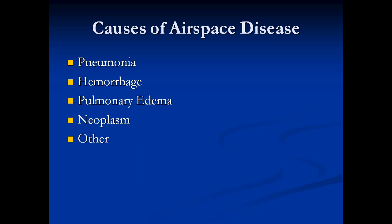What are the causes of airspace disease? First, there's pneumonia — a lobar pneumonia in particular will cause airspace disease. Hemorrhage into the airspaces will cause consolidation. Pulmonary edema can be interstitial or airspace, and when it becomes severe, it causes airspace disease. Finally, there are certain neoplasms and a few other idiopathic conditions that cause airspace disease as well.